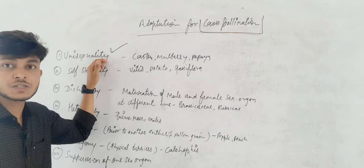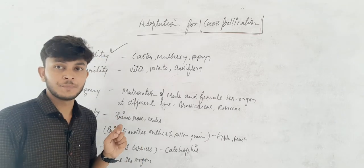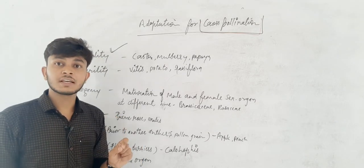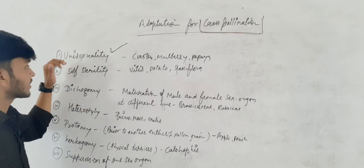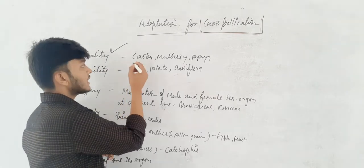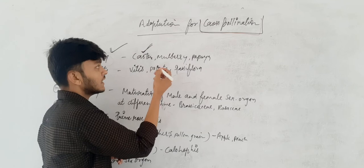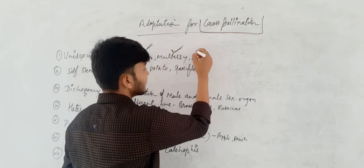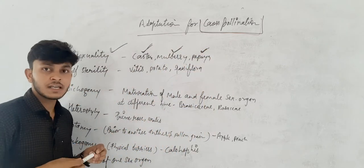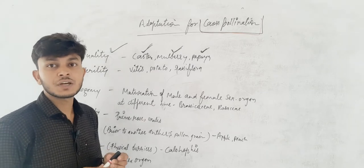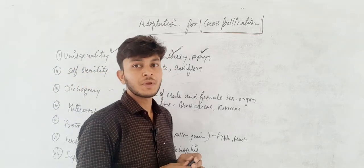What is unisexuality? A flower carrying only one sex organ is known as unisexuality. Examples are castor, mulberry, and others. These are examples of unisexual plants.